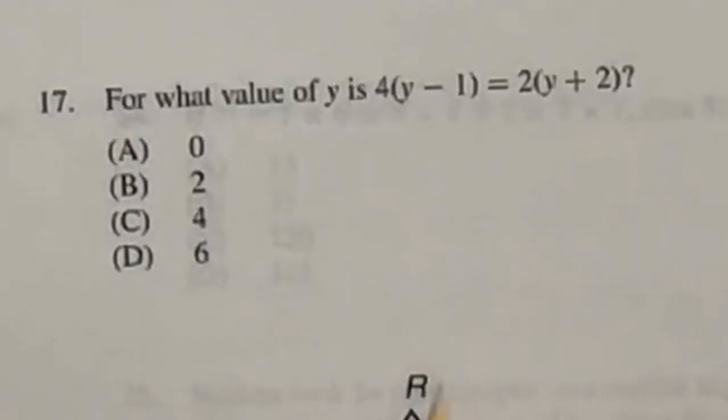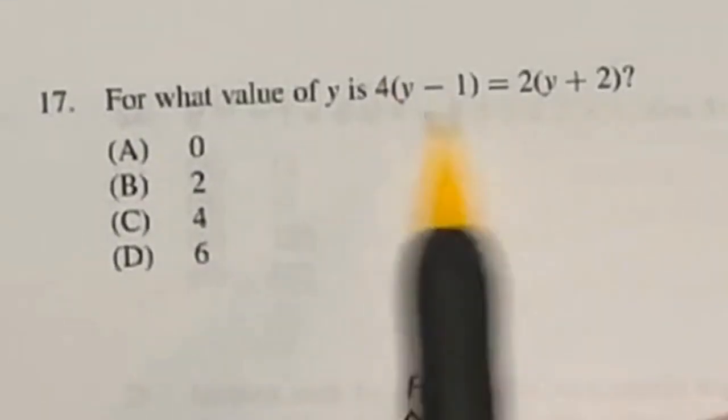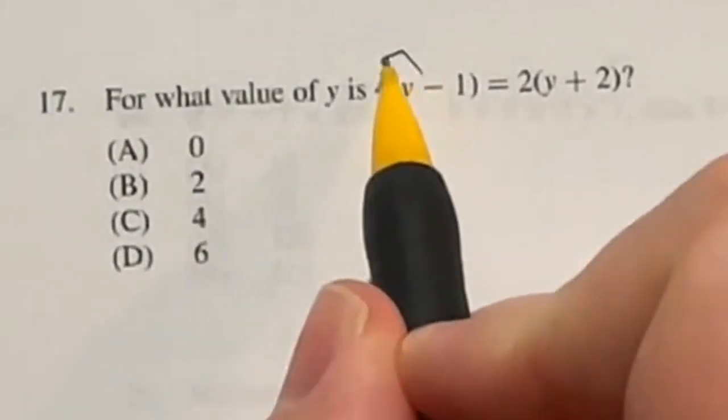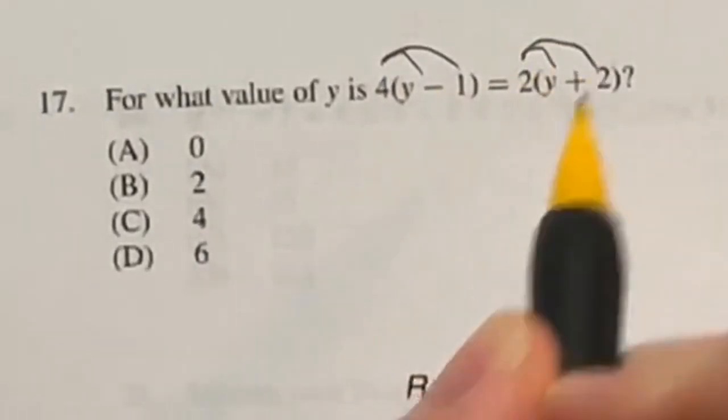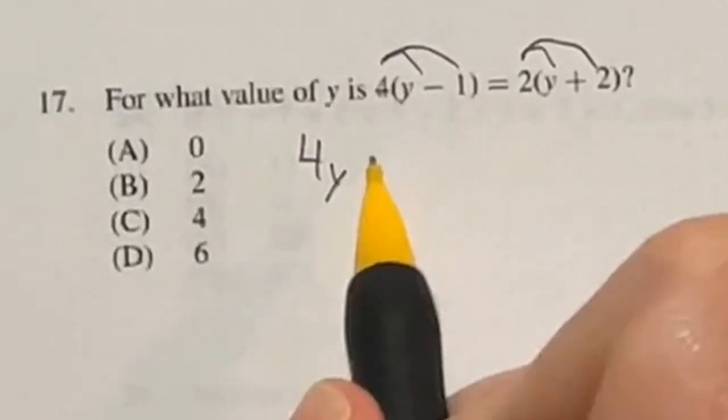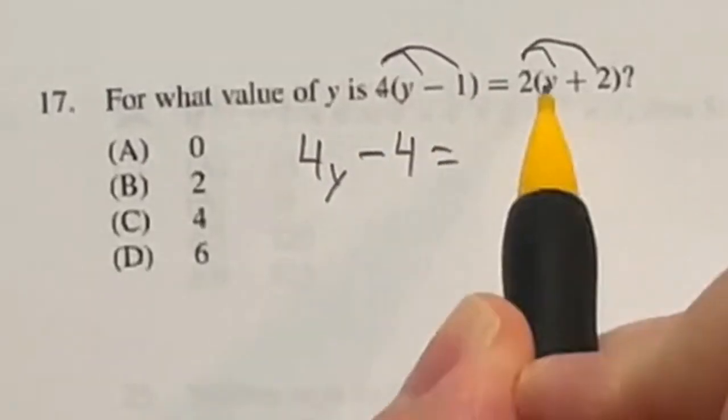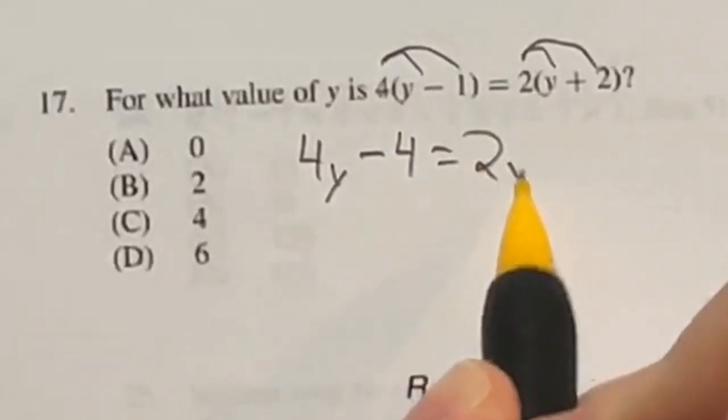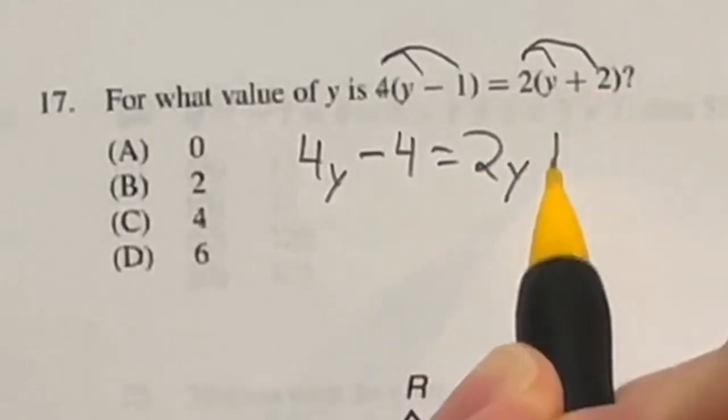For 17, we're just going to be doing a bunch of algebra. We have to solve for Y in this equation. First thing I'm going to do is distribute these numbers to everything inside and rewrite. 4 times Y is going to give me 4Y. 4 times negative 1 is negative 4 equals 2 times Y is 2Y, and 2 times 2 is going to be 4.